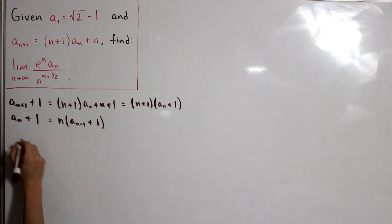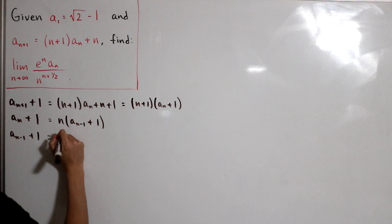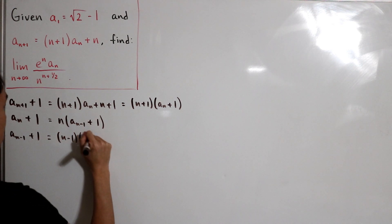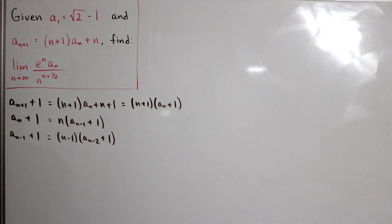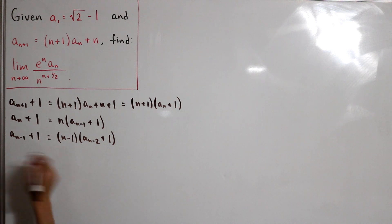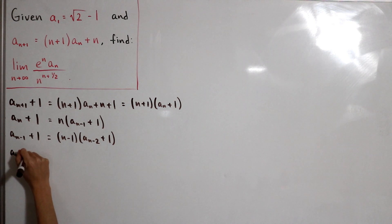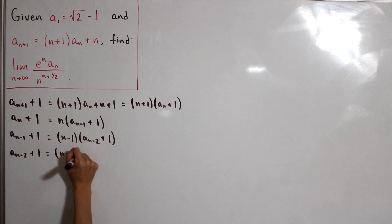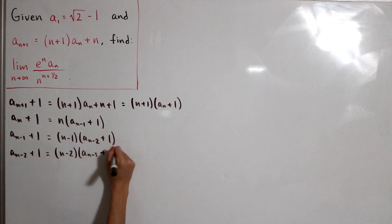Let's do this again: a sub (n-1) plus 1 gives us (n-1) times a sub (n-2) plus 1. And one more: a sub (n-2) plus 1 gives (n-2) times a sub (n-3) plus 1. We keep going and follow with an ellipsis to see the pattern.